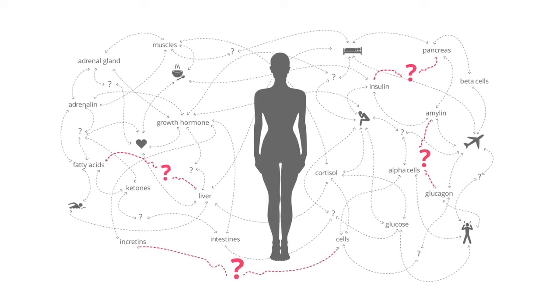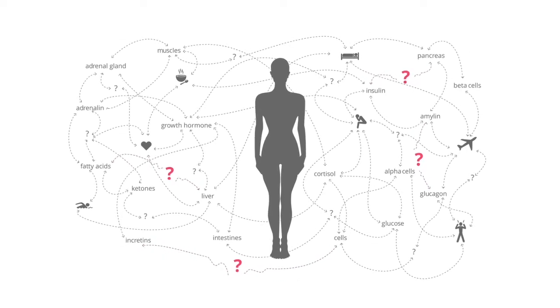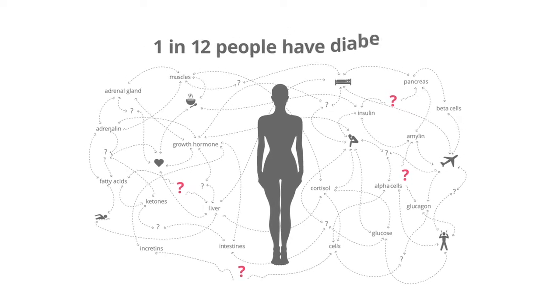It's breaking for millions of people, and no one fully understands what's broken and why. If it breaks for you, you'll be said to have diabetes.